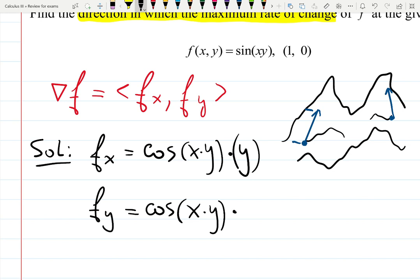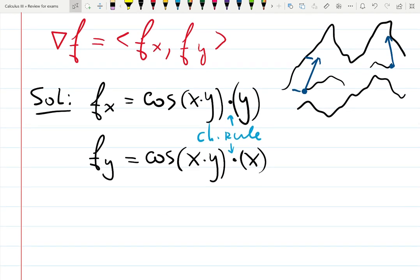Times the derivative of the function inside, but this time with respect to y. That gives you x, because x is a constant now. This is chain rule. Here and here. Now, you just need to write down that the gradient vector will be the collection of those derivatives.